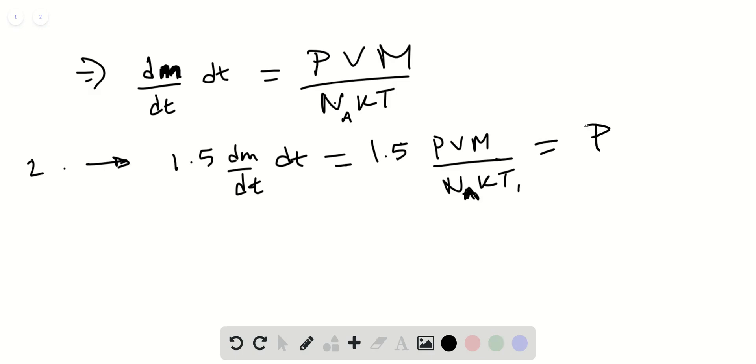And so that's equal to final PVm over nA KT2. Note the differences between the left and the right hand side here. PVm, nA, K, these are all the same. And so what we're left with is that 1.5 times T2 will be equal to T1. In other words, the final temperature will be 1 over 1.5 times the initial temperature, which is two-thirds the initial temperature.